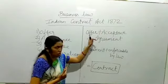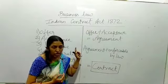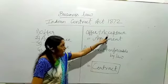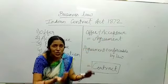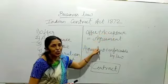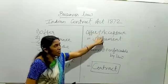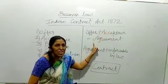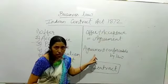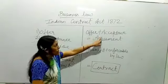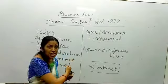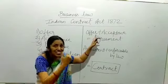Suppose main A hoon aur aap B hain. Theek hai, maine apni 10 lakh ki property bechne ka prastaav — offer — aapke saamne rakha. Toh: offer plus acceptance equals to agreement. Offer dhan prastaav, dhan sweekarti — paraavar kya ban gaya? Agreement. Theek hai. Ab jab woh agreement hota hai, yahan par do aur terms aa rahi hain — that is promise and consideration. Promise ka matlab kya hota hai?